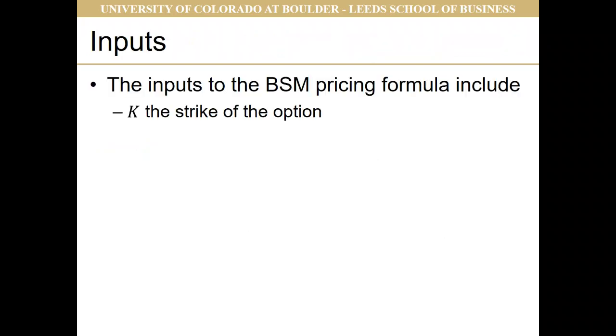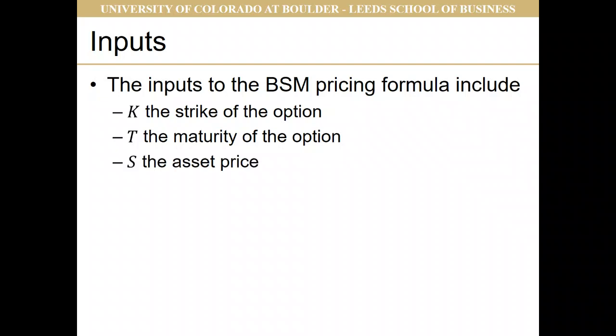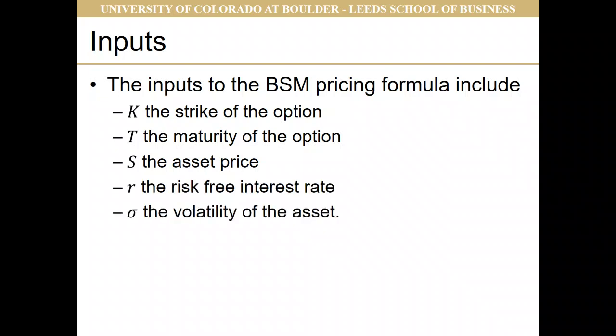Let's put the variables together. We've got K, the strike of the option, and T, the maturity of the option — those are things about the option itself. We've also got whether it's a call or a put. Then we have S, the asset price, R, the risk-free interest rate, and sigma, the volatility of the asset.